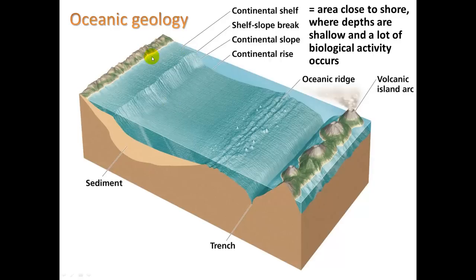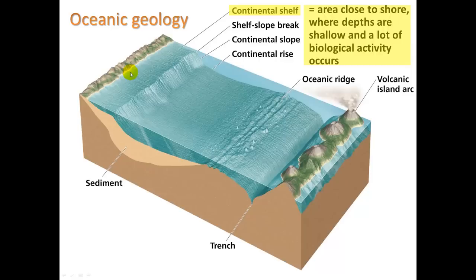Here's a cutaway slice: the key term to know is continental shelf — the area close to shore where depths are shallow and a lot of biological activity occurs, like an ecotone where a land biome overlaps a tidal biome. Sediment here adds nutrients to the water. Trenches are formed from one tectonic plate going underneath another, and in these areas magma can come up close to the surface, creating volcanic islands.